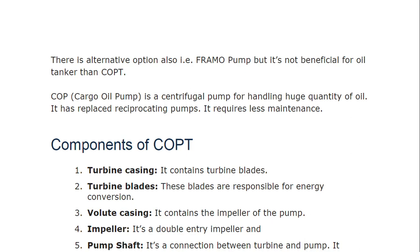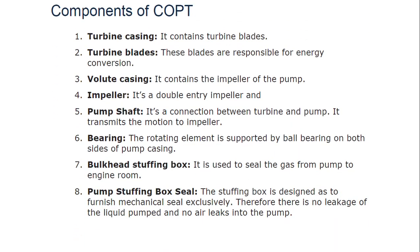The Cargo Oil Pump is a centrifugal pump for handling huge quantities of oil. It has replaced the reciprocating pump and requires less maintenance. Components of COPT include: the turbine casing with turbine blades responsible for energy conversion; the volute casing which contains the impeller of the pump; a double entry impeller; and the pump shaft which connects the turbine and pump and transmits motion to the impeller. The rotating element is supported by ball bearings on both sides of the pump casing.